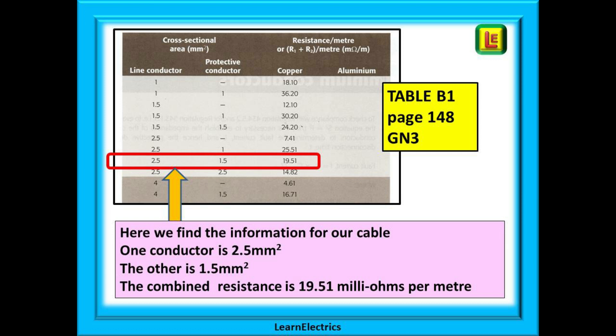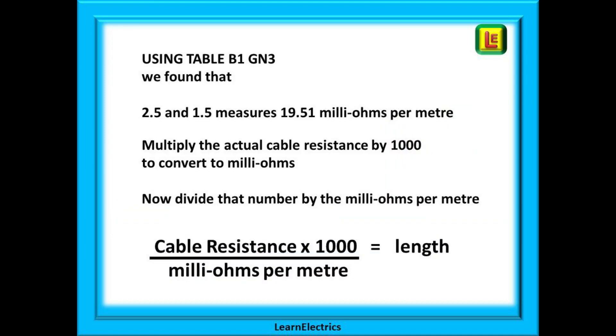Using the table we found that 2.5 twin and earth with a 1.5 earth has a resistance of 19.51 milli ohms per meter length. We measured the cable in ohms yet the table is in milli ohms they don't match. We need to make them the same units. So multiply the measured resistance by 1000 and now everything is in milli ohms. Divide that number by the milli ohms per meter to give you the length.